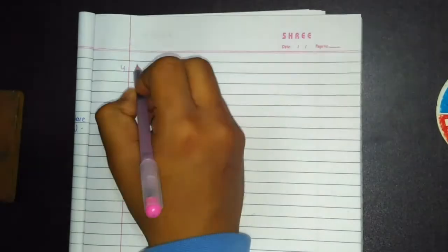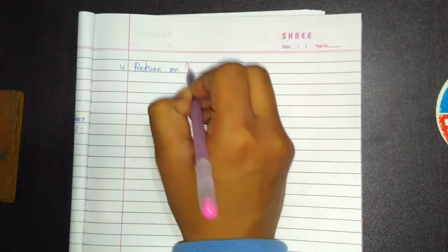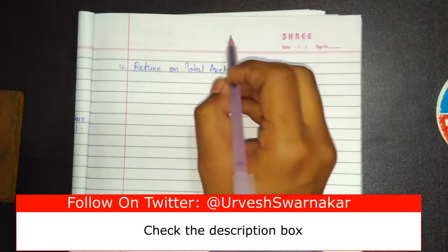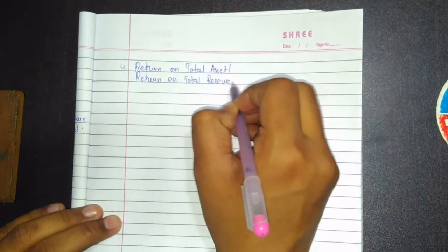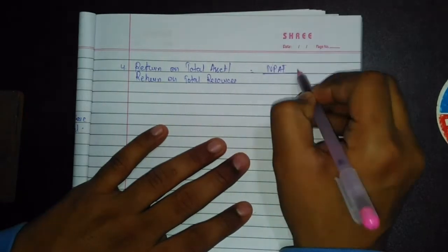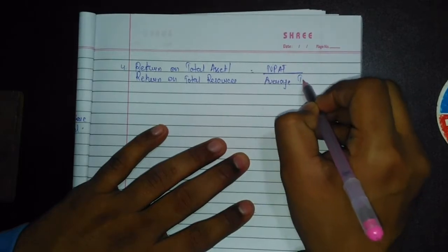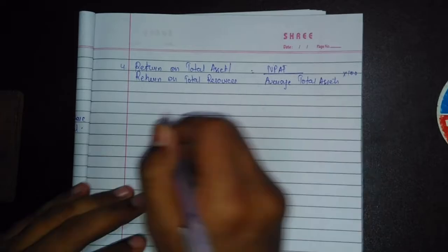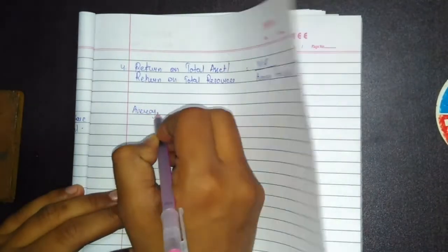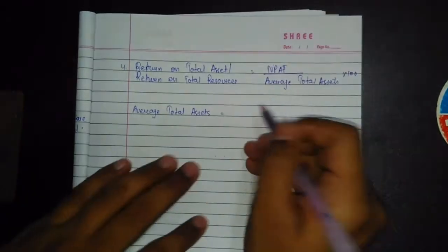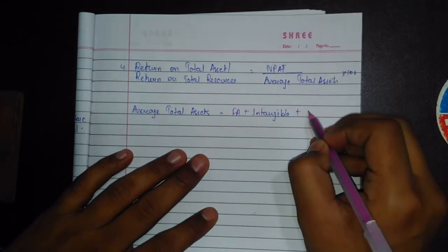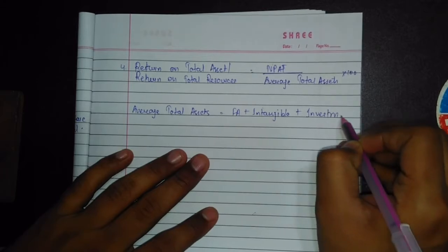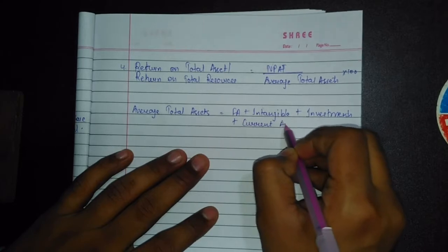The 4th formula is Return on Total Assets, also called Return on Total Resources. The formula is: Net Profit (EBIT) divided by Average Total Assets, multiplied by 100. Average Total Assets equals Fixed Assets plus Intangible Assets plus Investments plus Current Assets.